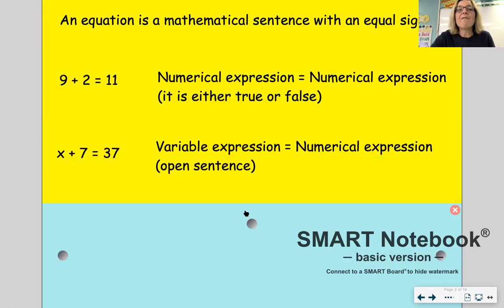We can also have variable equations. And that happens when you have a variable involved. So in this case, x plus 7 is an expression. That's called a variable expression or an algebraic expression because it contains a variable. 37 is a numerical expression. When we put them together, this becomes a variable equation or an algebraic equation. We call this an open sentence. Open sentence. And that is any equation that contains a variable is called an open sentence.